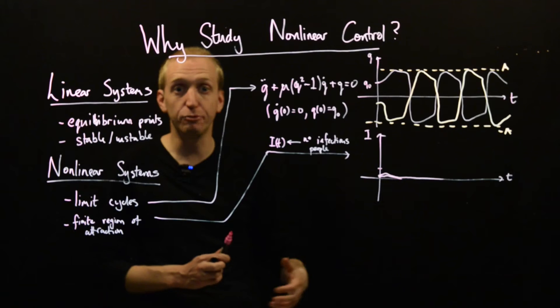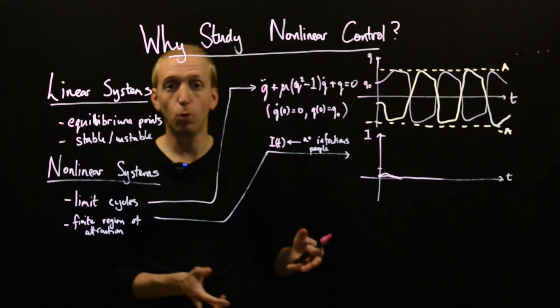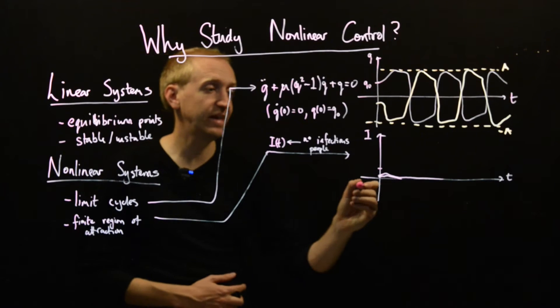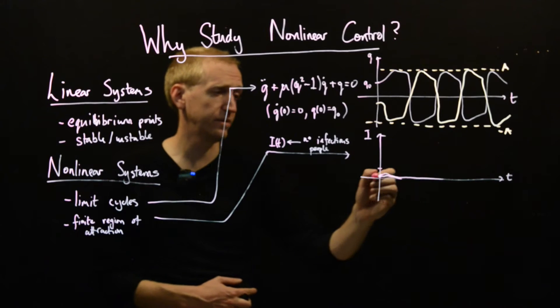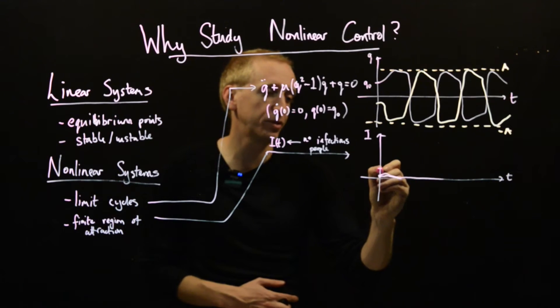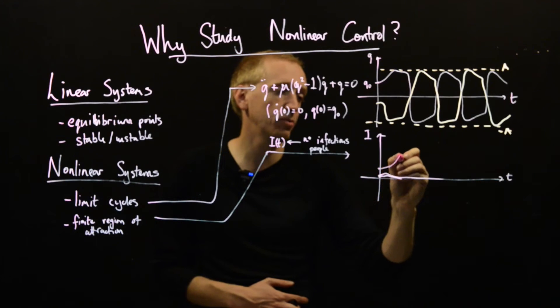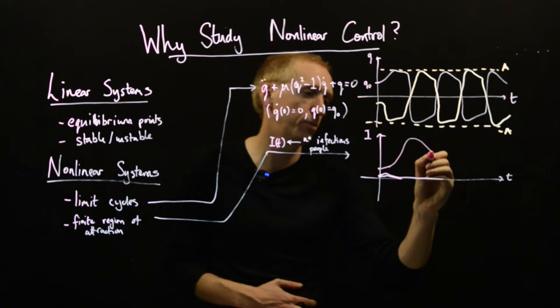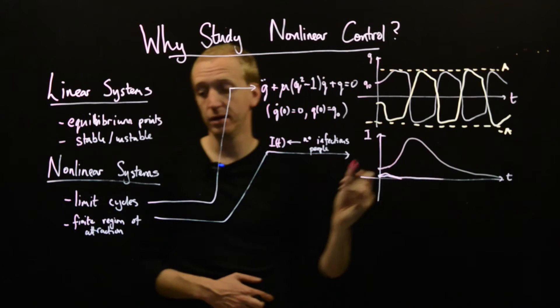But now what would happen if the number of infectious people was quite a bit larger and maybe pushing the capacity of your test and trace system? Especially if you're doing this over the phone and so you need people to ring up everyone's friends and say you need to isolate. Clearly, if there's a lot of people to ring up, the system will get overwhelmed and get saturated. Now, what might happen? Well, instead of just this little bump that's contained, now the system might just get completely overwhelmed.